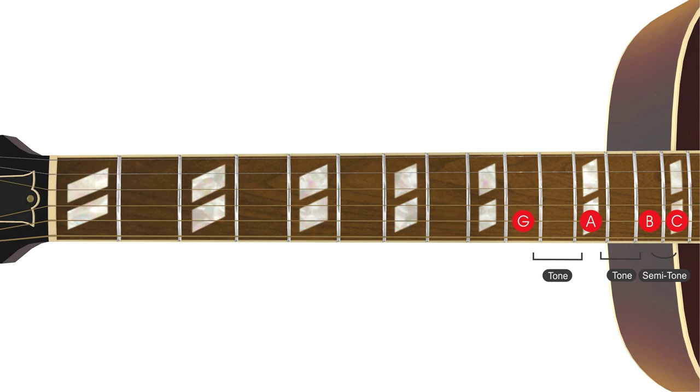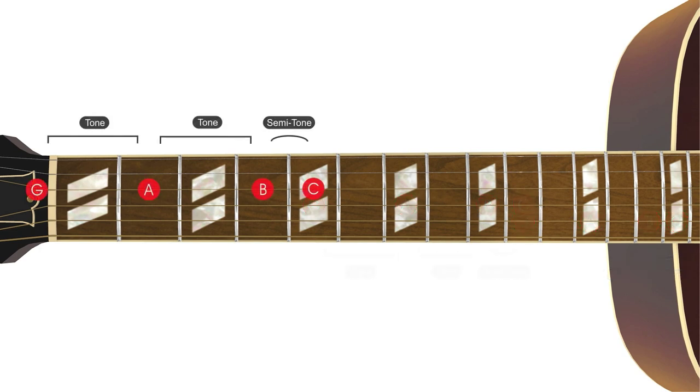We will isolate the upper tetrachord beginning on G and move these four notes first over to the fourth string, and then on to the third, where we can conveniently complete the scale on one string.